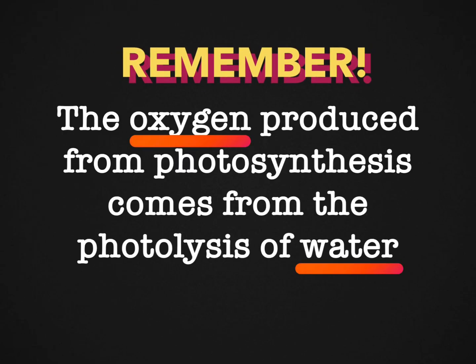The oxygen produced as a waste product from photosynthesis comes from the photolysis of water. This is a point to note because many students think it comes from the carbon dioxide, but the oxygen actually comes from the photolysis, or splitting, of water.